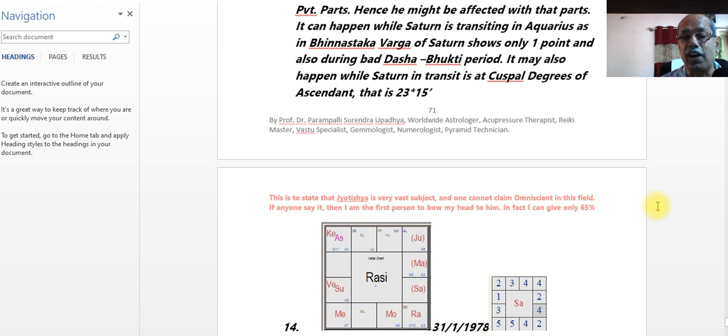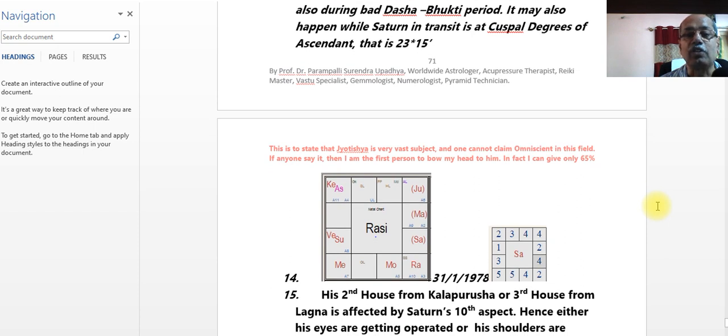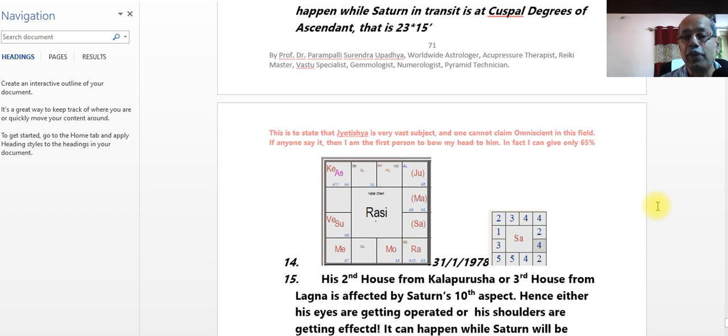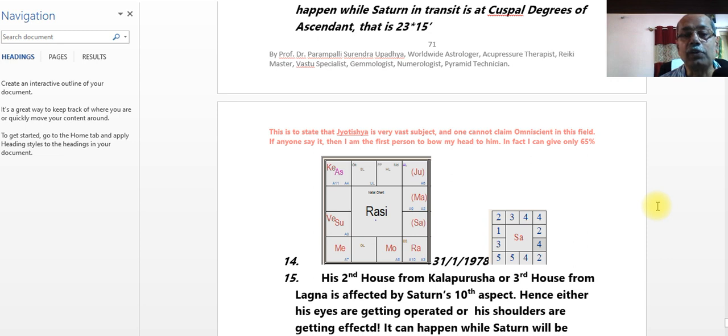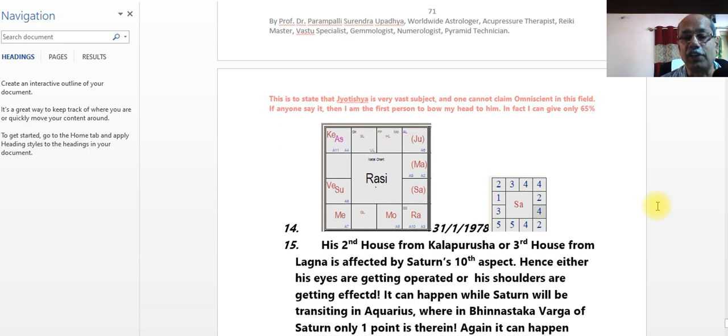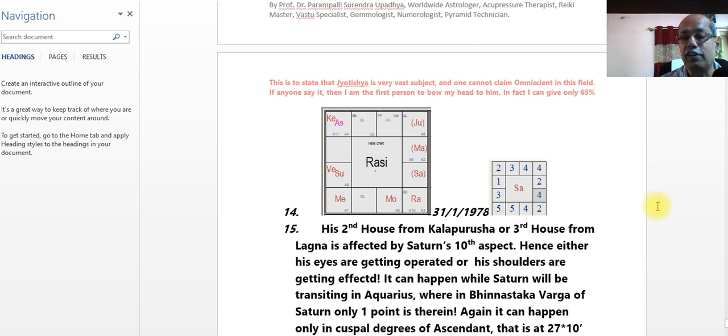That is the name for Kalapurusha. Shani from Leo. Then because his second house, from Lagna, the throat, food, both shoulders would come to lying at 17 degrees where only the names in Kumbha.